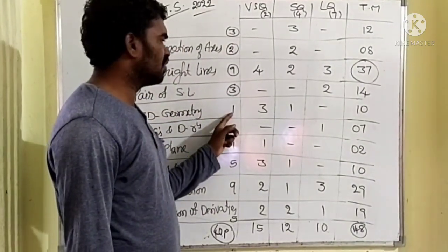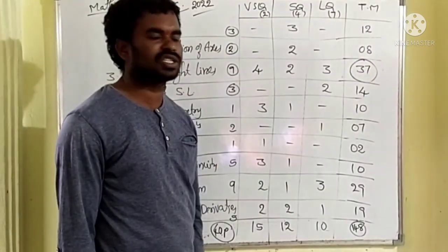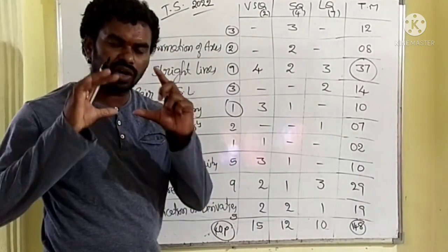3D geometry, only 1 part. With the 1 part, 3 very short questions, 1 four marks question, 10 questions, 10 marks we can get. See, only 1 part. Means, only 1 video.